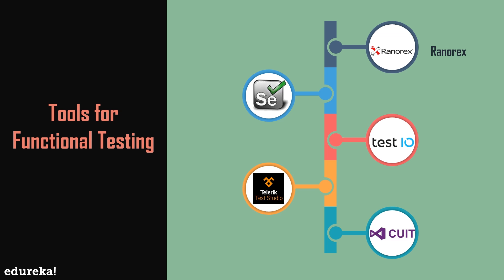First we have Ranorex Studio, a commercial Windows GUI test automation tool that supports functional UI testing on desktop, web, and mobile applications. It is used by over 4,000 companies worldwide. Ranorex Studio is easy for beginners with a codeless click-and-go interface and helpful wizards, but powerful for automation experts with a full IDE. Next up we have Selenium, an open source functional testing tool that can be downloaded and used without any cost, supported by the Apache 2.0 license. It is a web application testing product that accepts many languages for writing test scripts, including C#, Java, Perl, PHP, and Python, and can be deployed on Windows, Mac OS, and Linux.